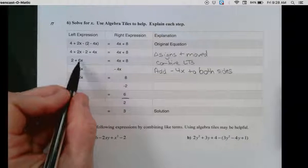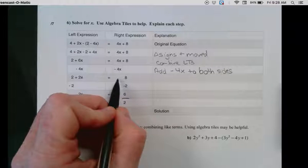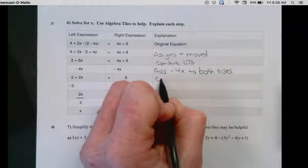So 6x minus 4x became 2x. 4x minus 4x became no x's. So what did we do? We combined like terms.